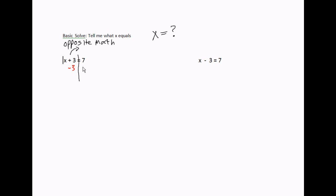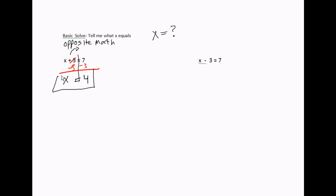...is subtracting three. And you have to do it to both sides to even things out. So three minus three cancels out and we're left with just x on the left-hand side. Seven minus three is four, so my answer is x equals four.